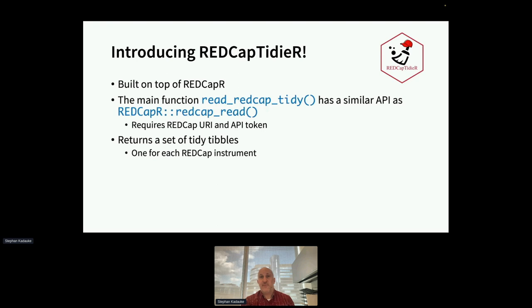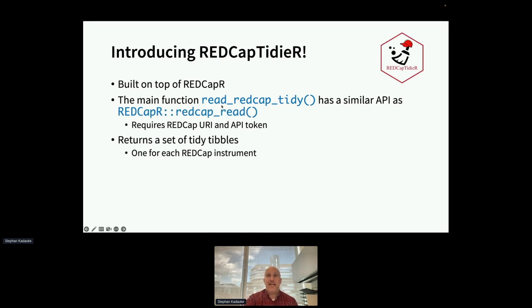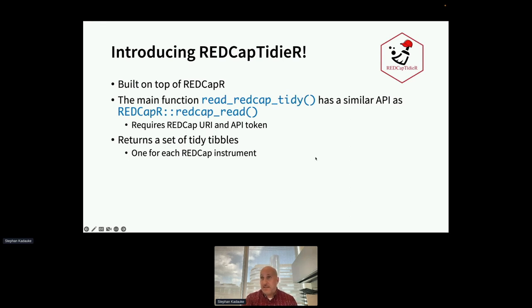This is the problem we're trying to solve — having to deal with this sparse matrix. We named it REDCap TidyR by squeezing the 'tidy' idea in between REDCap and R, to highlight that this is really something built on top of REDCap R, which we're huge fans of. The main function, read_redcap_tidy, has a similar API to REDCapRead or REDCapReadOneShot — it just requires a REDCap URI and an API token. What it returns is a set of tidy tibbles, with the big idea being that you get one table for each REDCap instrument.